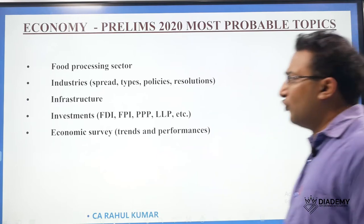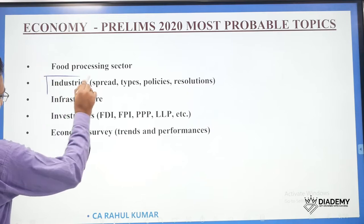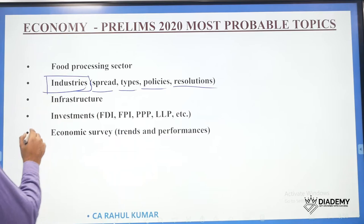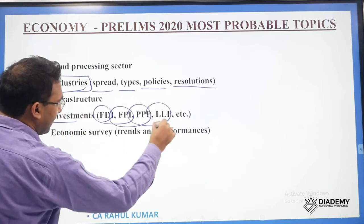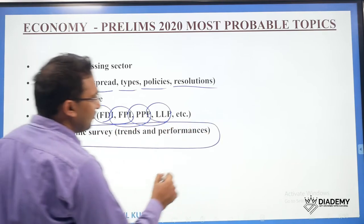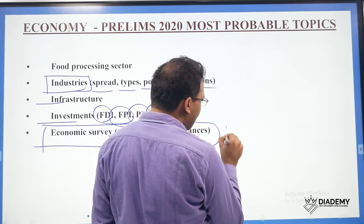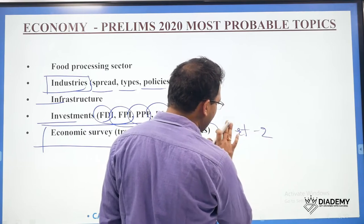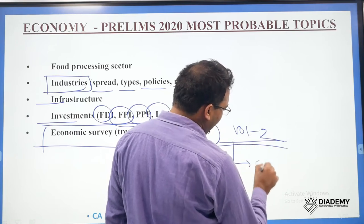Other important areas include food processing industries — especially the latest policies and resolutions — infrastructure, investment, FDI, FPI, PPP, LLP. The Economic Survey is also important. For the prelims, you need to focus on Volume 2 — specifically chapter numbers 1 to 5 of Volume 2.